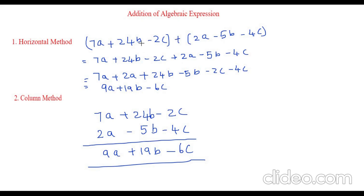Horizontal method: we write both things in parenthesis and remove the parenthesis, bring all the like terms together and add and subtract. Column method: we write it in rows and then we add the numbers.